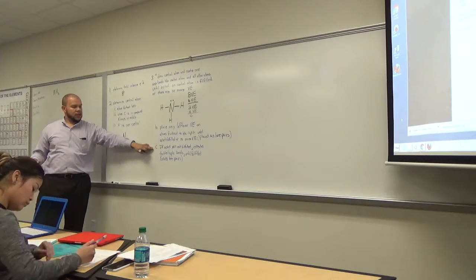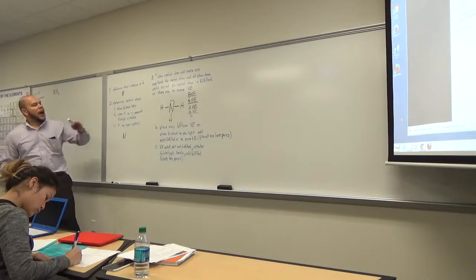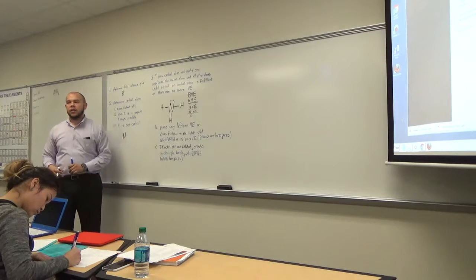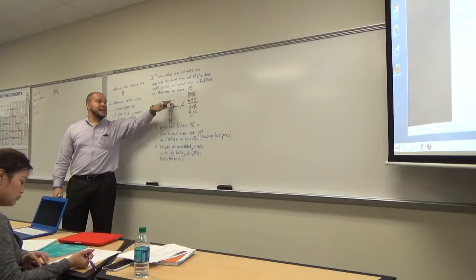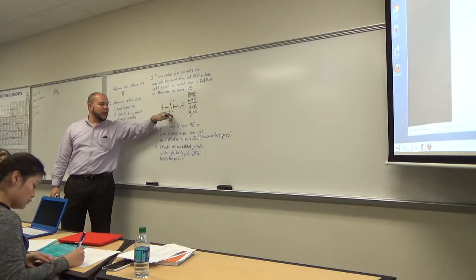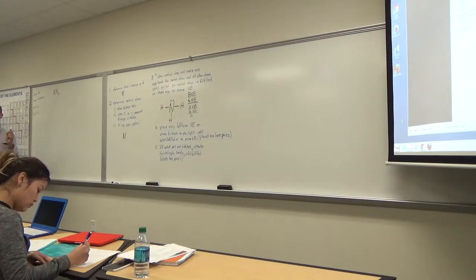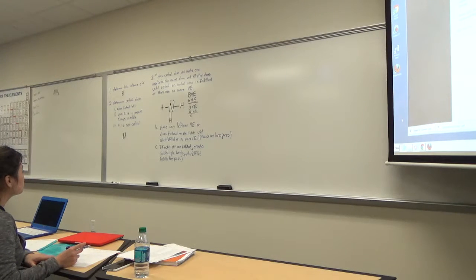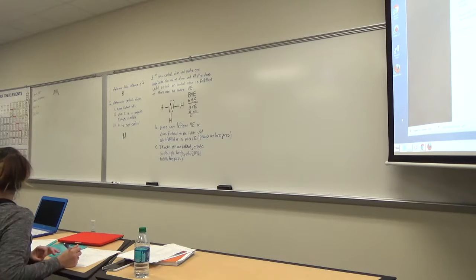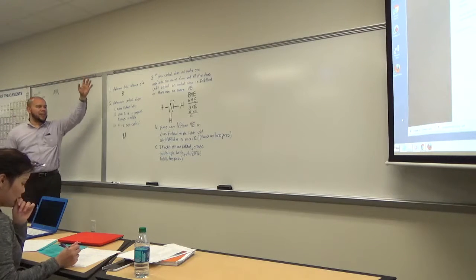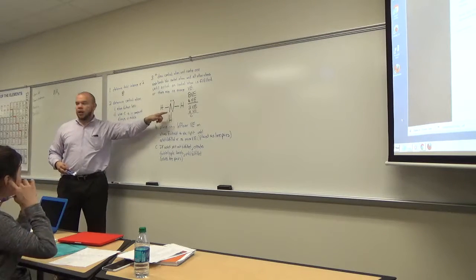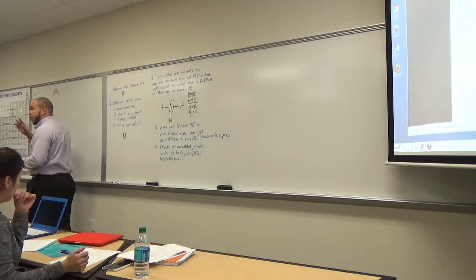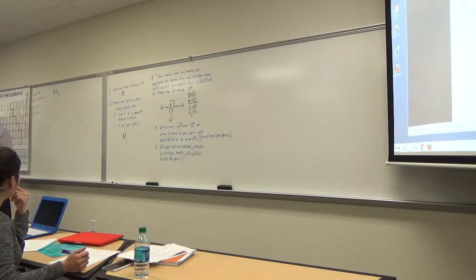Step 3C: if octet is not fulfilled — let's check. Octet is fulfilled on all hydrogens: single bond gives 2 electrons. Octet is now fulfilled on nitrogen: the lone pair plus three bonds gives eight electrons — one, two, three, four, five, six, seven, eight. We've used all valence electrons and octet is fulfilled on every atom. That is the Lewis structure for ammonia. The orientation of H doesn't matter; you can work on any of the four sides.